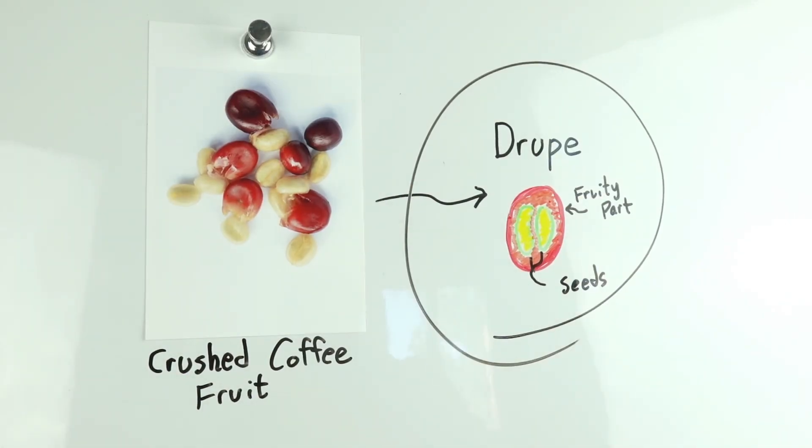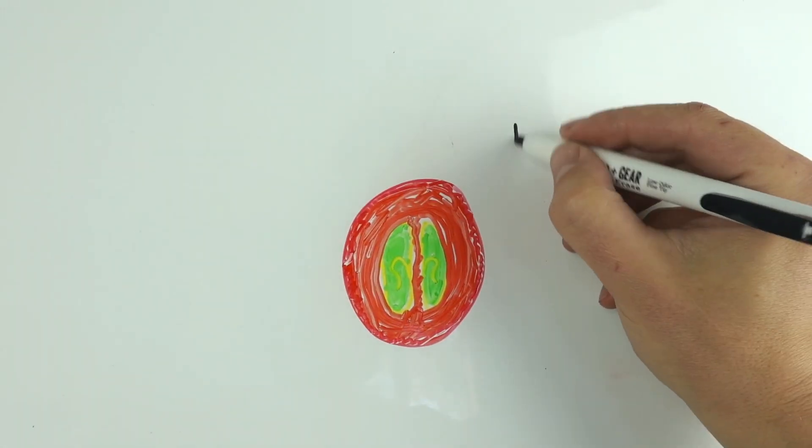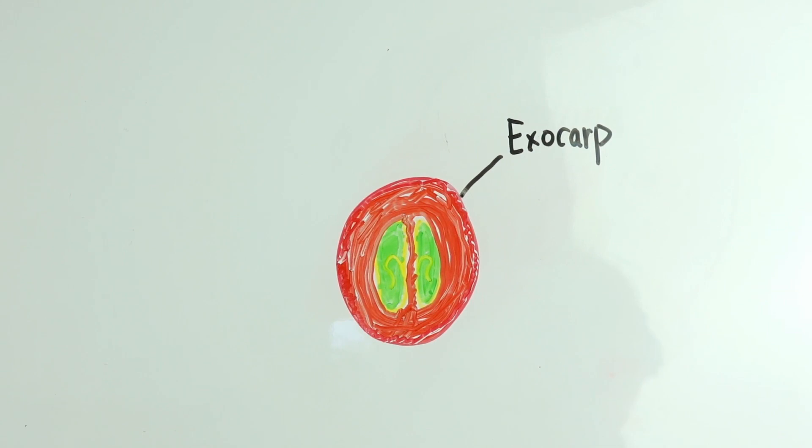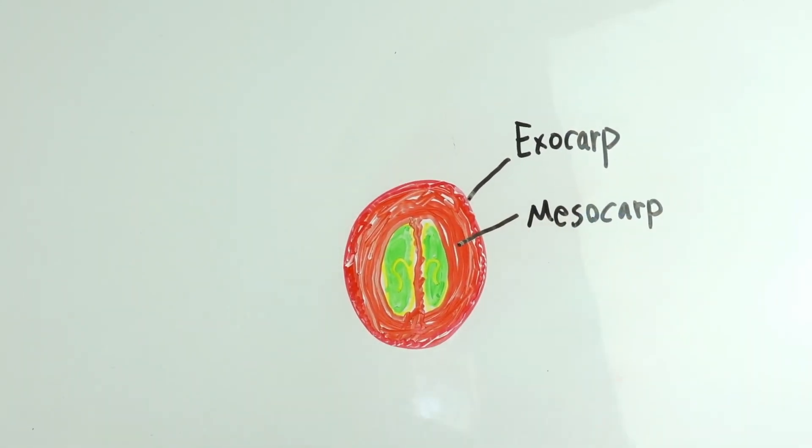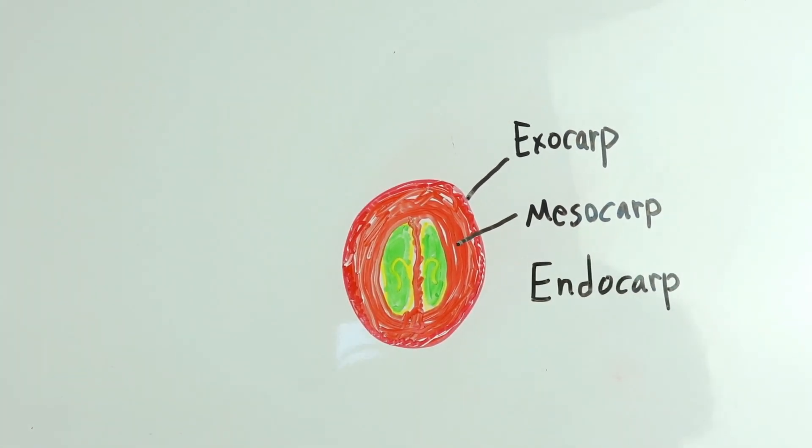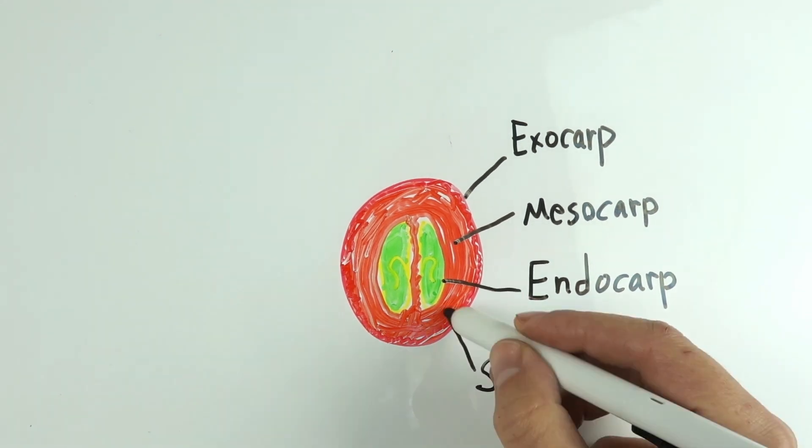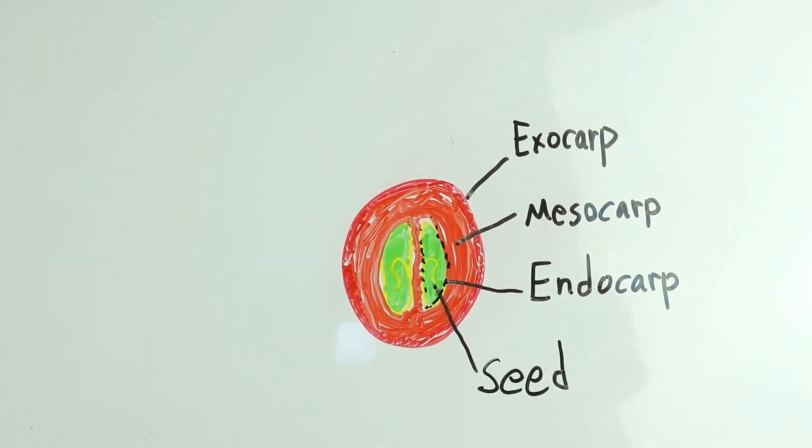Let's take a closer look at the coffee cherry. Its structure can be divided into several parts. Exocarp, the outer layer of the fruit, also known as the skin. Mesocarp, the middle layer of the fruit, which consists of a fleshy outer layer called the pulp. Endocarp, the inner shell that protects the seeds, commonly called the parchment. And finally, the seed. This is the coffee bean, which is wrapped in a further layer called the testa or silver skin.